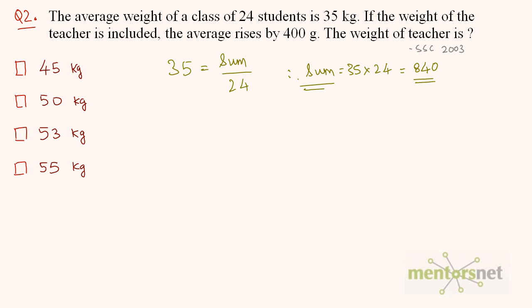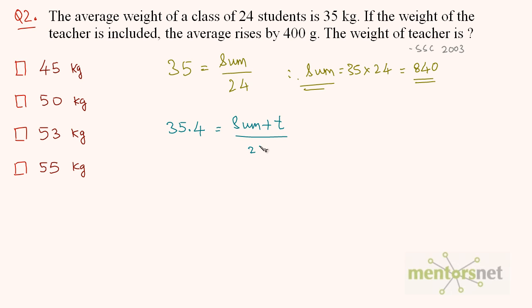Now, if the weight of the teacher is also included in this sum, the average rises by 400 grams, which means the average becomes 35.4 kgs. So 35.4 equals the original sum plus the teacher's weight divided by count plus 1, which is 25. Therefore, sum plus t gives us 35.4 multiplied by 25, which equals 885.